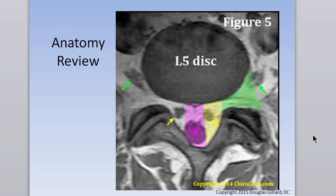Know the anatomical parts. The pink star is the thecal sac. Remember these images are always reversed — that's the right traversing S1 nerve root, and that is the right exiting nerve root, also called the right dorsal root ganglion. Make sure you know that.